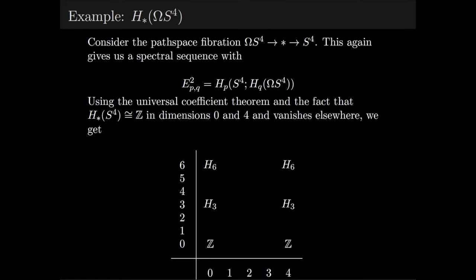For the second example, consider the path space fibration from the loop space of S⁴ into star into S⁴. This again gives a spectral sequence with the following E² page. Using the universal coefficient theorem and the fact that H star of S⁴ is Z in dimensions 0 and 4 and vanishes elsewhere, we get the following E² page.